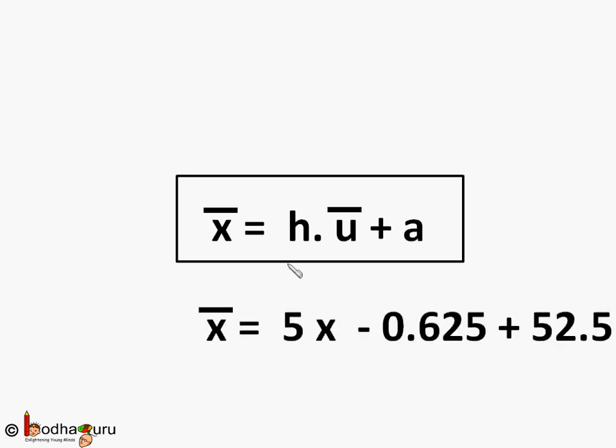So let's find the mean x bar equal to h times u bar plus a. h is equal to 5, u bar is equal to minus 0.625 we calculated, and a equal to 52.5 we took earlier. So x bar equal to 5 into minus 0.625 plus 52.5. The mean we get is 49.375 kg.